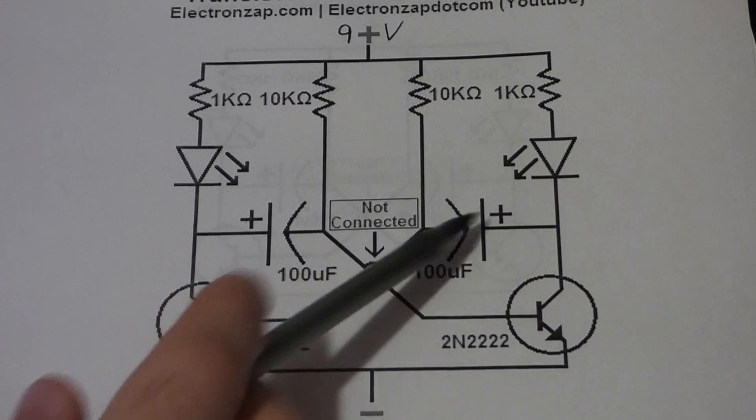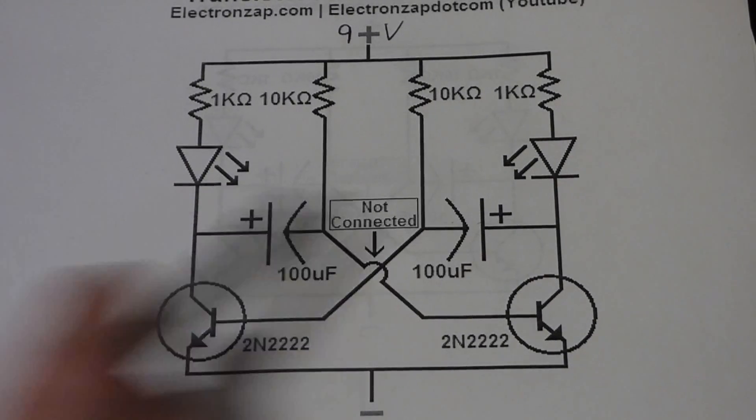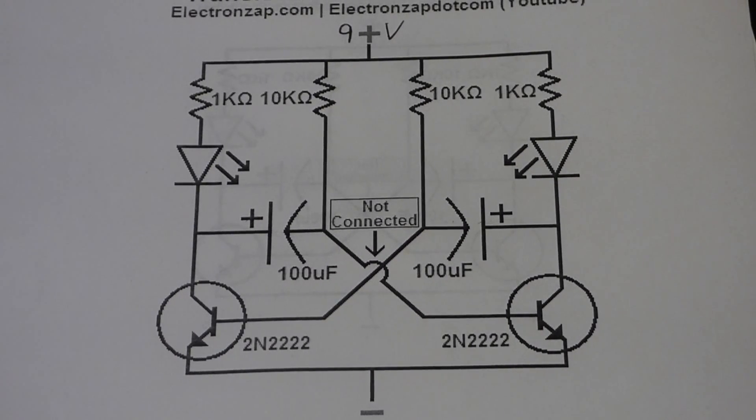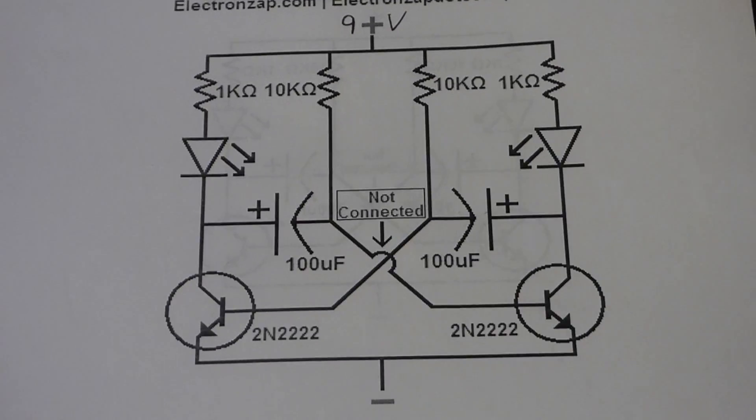And in an actual astable multivibrator circuit you wouldn't have LEDs here. You would actually have outputs on one or either side that go to other parts of a circuit. But this is a demonstration circuit. It's easy to see LEDs and wire it up this way. So that's why I made it the way that I did.